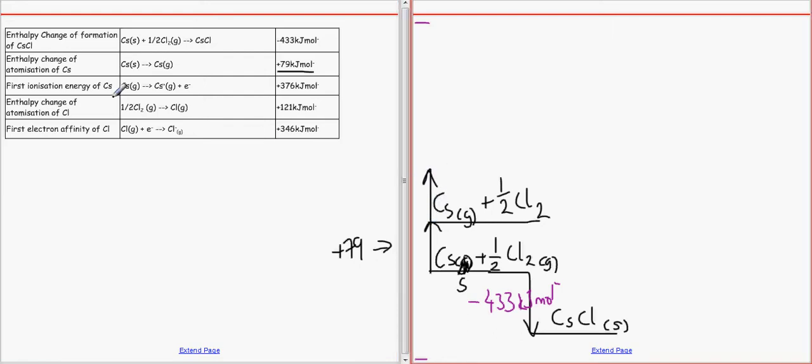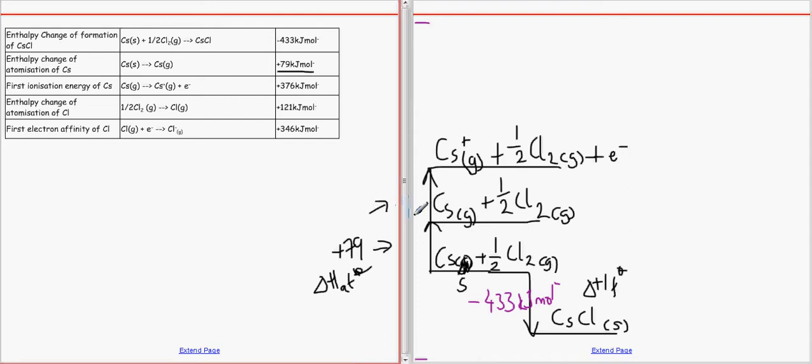And then we are going to go up again because we are going to ionise caesium now. So let's ionise it. We can atomise chlorine if we wanted to, but let's just ionise Caesium. So if we ionise it that will make Caesium plus gas. Remember state symbols are very important in Born-Haber cycles and lattice enthalpy, very important. Plus one half Cl2 gas plus that electron that we've just lost over here, and that over there is plus 376 kilojoules per mole.